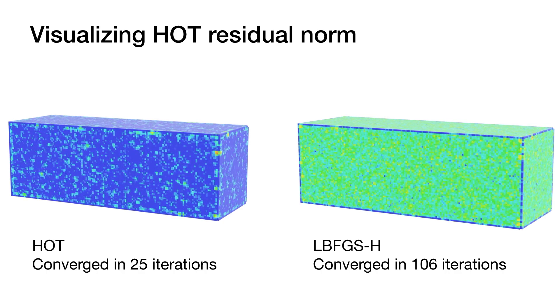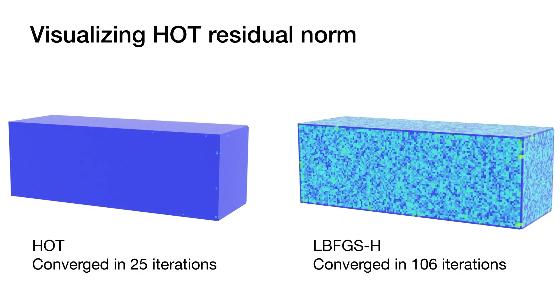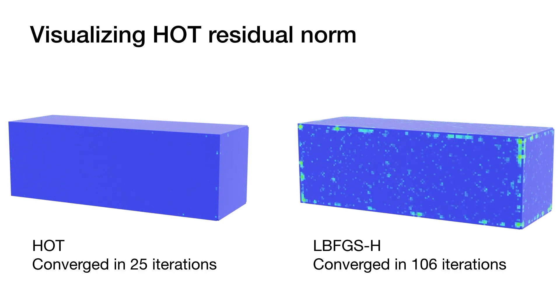Compared to LBFGS-H shown on the right, which slowly reduces both high and low-frequency error, HOT converges much faster.